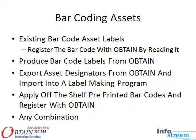The best practice to apply unique identifiers to your assets depends on how your asset practice works today. If the assets are already barcoded, those codes can simply be registered with Obtain. Obtain has the ability to produce labels; however, the long-term durability of the label will be driven by the quality of the printer and the stock that's used.